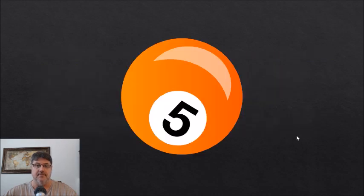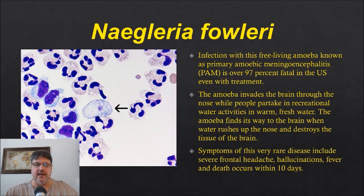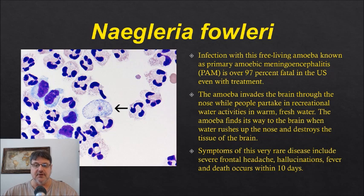Number five: Naegleria fowleri. Infection with this free-living amoeba, known as primary amoebic meningoencephalitis or PAM, is over 97% fatal in the U.S. even with treatment. The amoeba invades the brain through the nose while people partake in recreational water activities in warm, fresh water. The amoeba finds its way to the brain when water rushes up the nose and destroys brain tissue. Symptoms of this very rare disease include severe frontal headache, hallucinations, fever, and death occurs within 10 days.